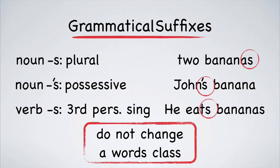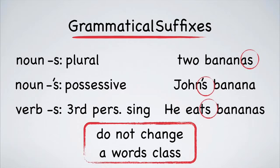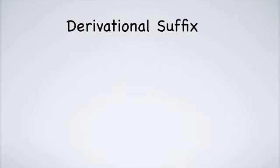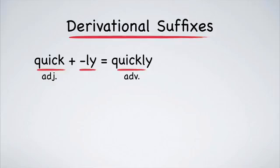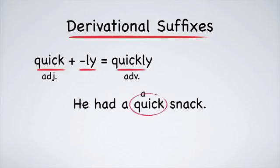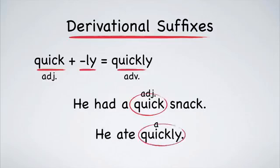Derivational suffixes do. For example, the adjective quick can have ly added to it to create the adverb quickly. Here are two example sentences. He had a quick snack. That's an adjective. He ate it quickly. That's an adverb. Learning how to use these derivational suffixes is one of the keys to speaking English fluently.